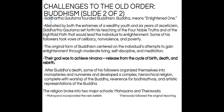The original form of Buddhism centers on the individual's attempt to gain enlightenment through moderate living, self-discipline, and meditation. The goal is to achieve nirvana, which is release from the cycle of birth, death, and rebirth — very similar to moksha. However, in the early phases of Hinduism, women could not achieve moksha, only men could. In Buddhism, anyone can achieve nirvana once they become enlightened.